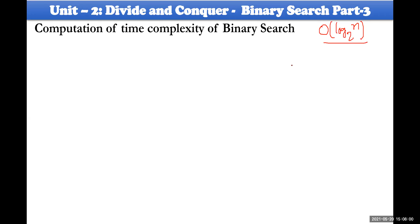Before computing the time complexity of binary search, remember one key thing: binary search always reduces its search space based on the mid element. Compared to the target element, either the left half (1 to mid−1) or the right half (mid+1 to end) is eliminated. Keep this point in mind — it's very important.